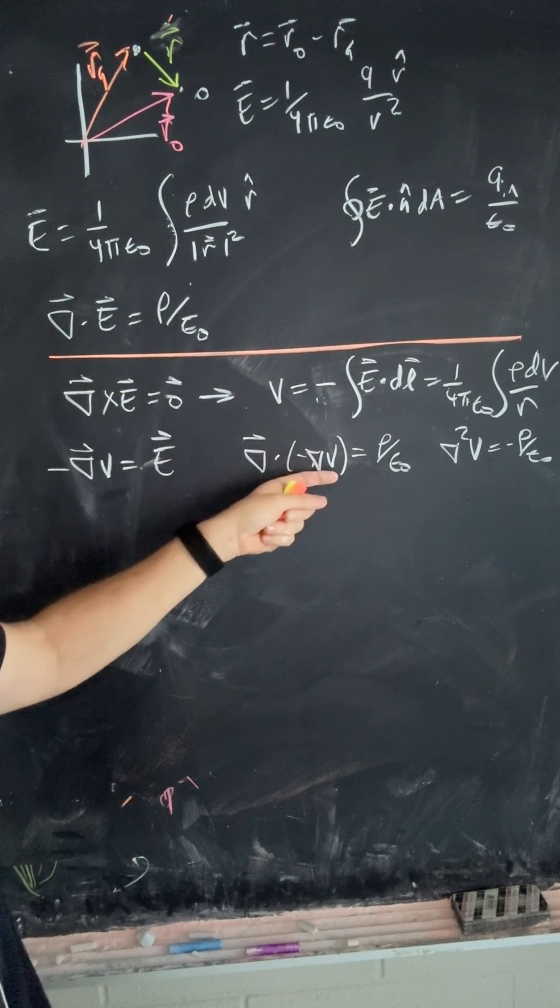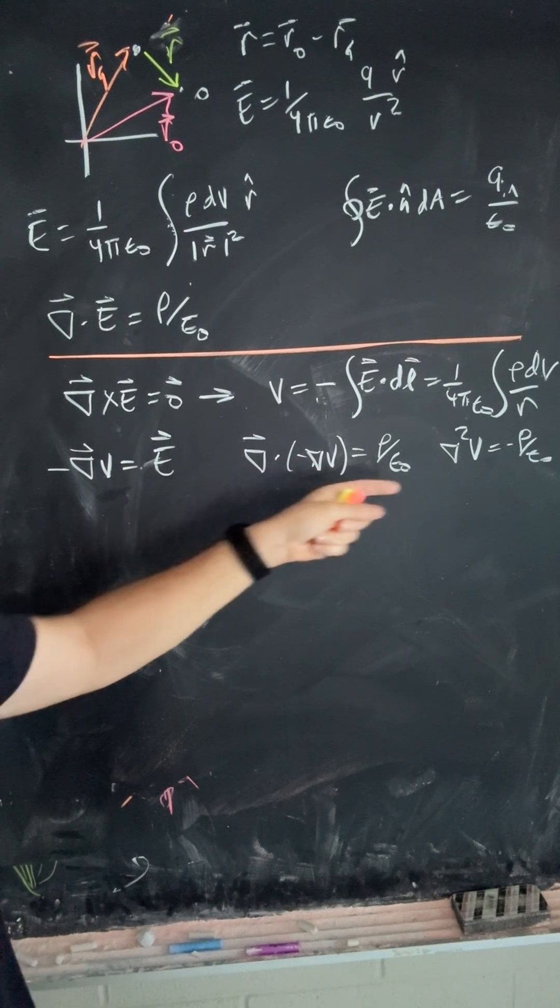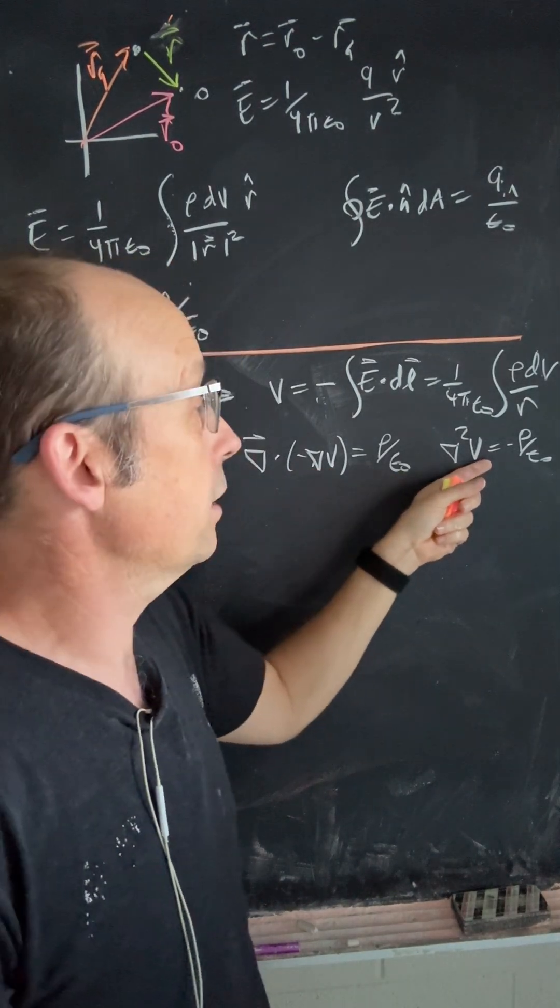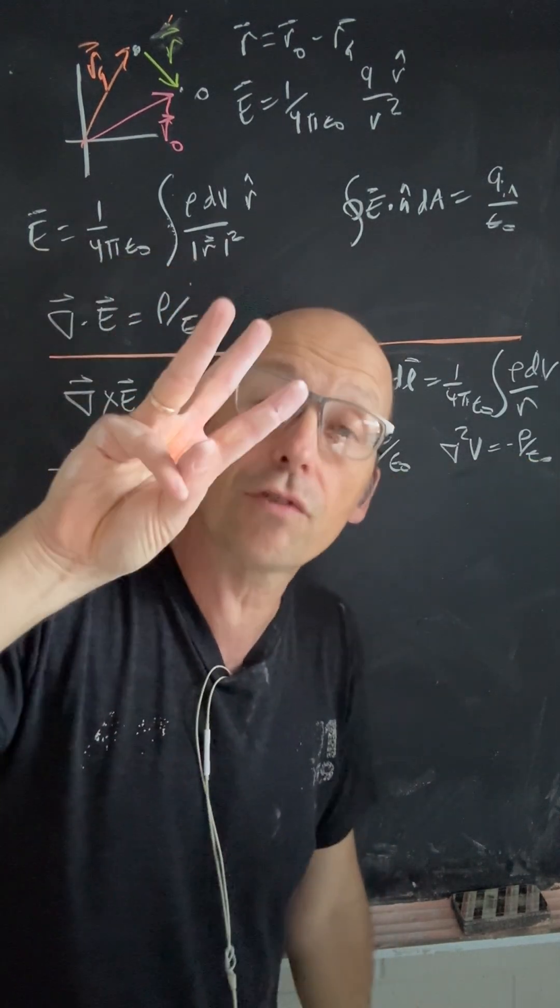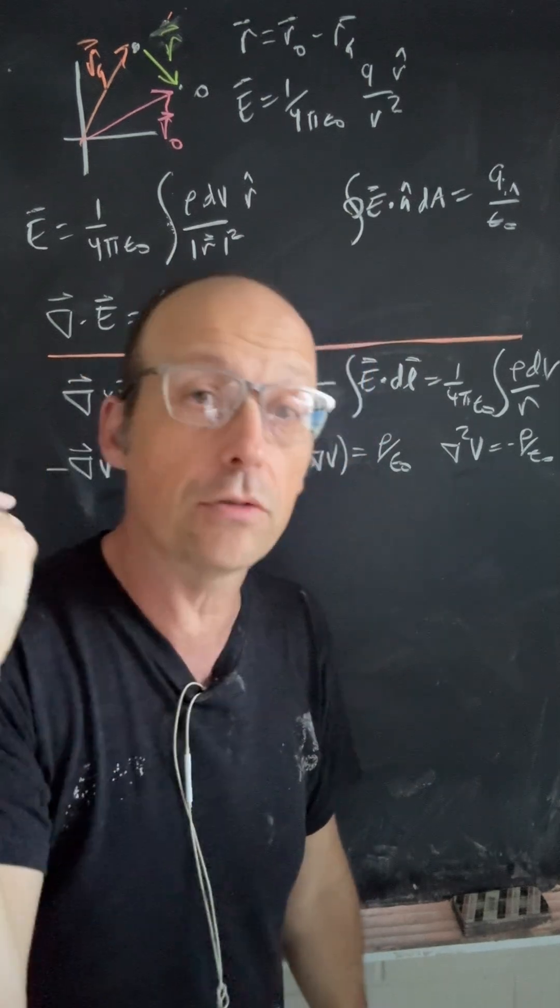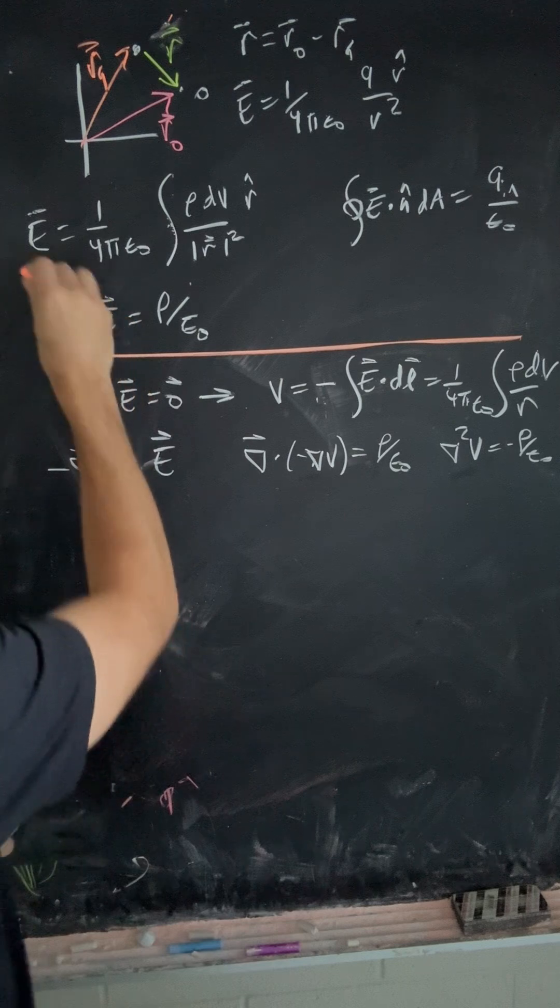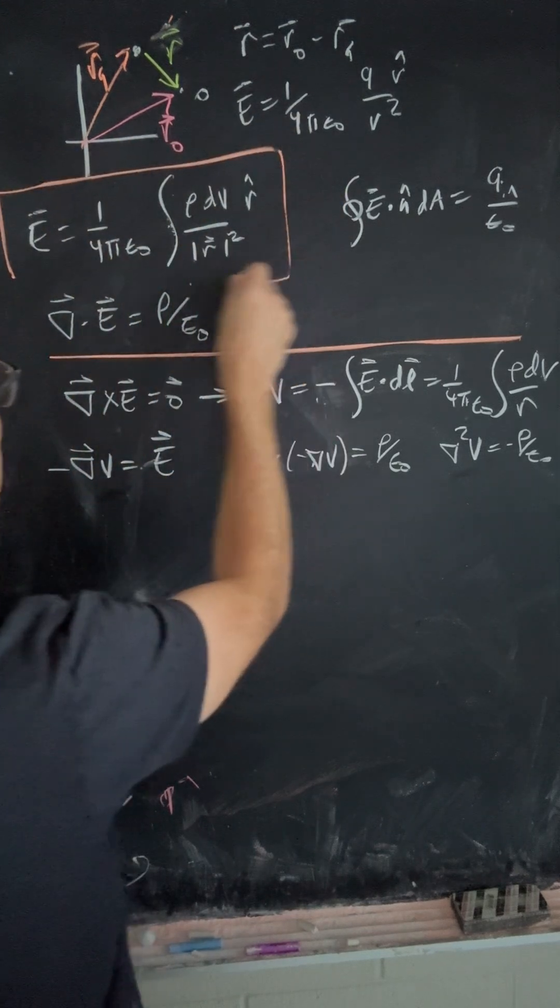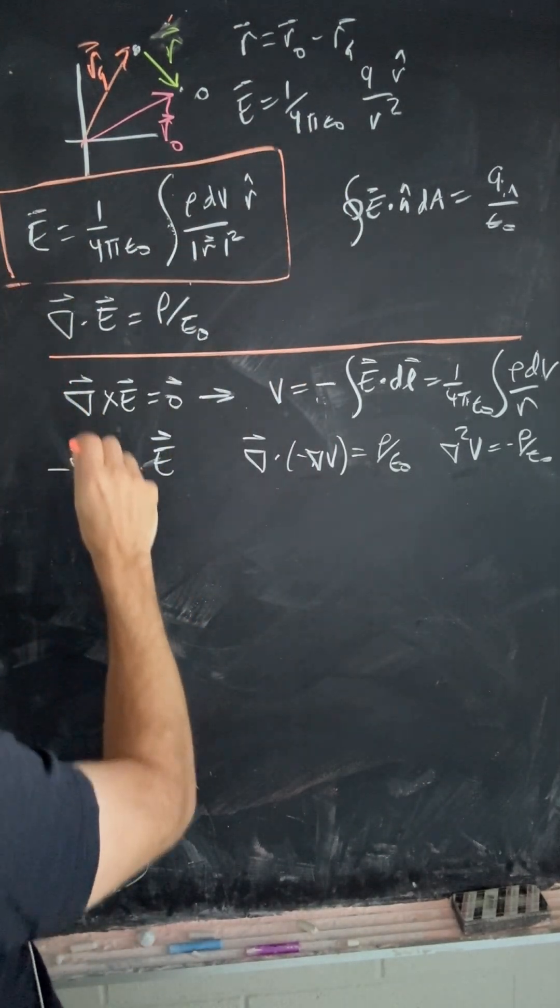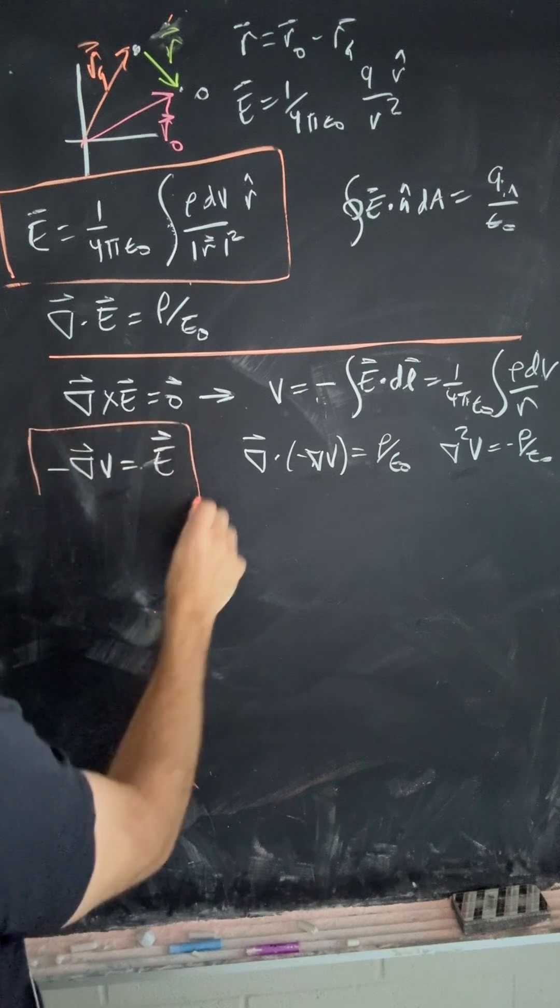If I put that into Gauss's law, negative the divergence of potential, I get this equation, which relates the potential to the charge. So you have those three things: electric field, electric potential, electric charge, and we have six ways to get from one to the other. So here's the equation to get the electric field from the charge density. Here's the equation to get the electric field from the electric potential.